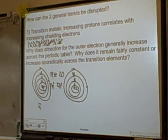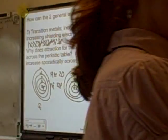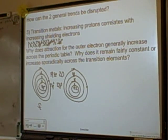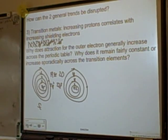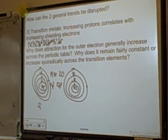In summary: as you go across the periodic table, more protons and same shielding means stronger attraction. As you go down, more shielding means weaker attraction. But always look for electron-electron repulsion, look for transition elements, and look for removing from an s versus a p orbital if you are not following the general trend.